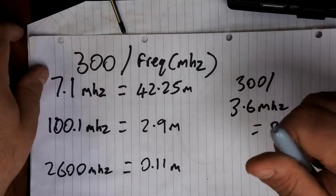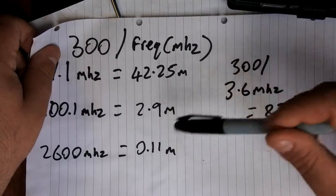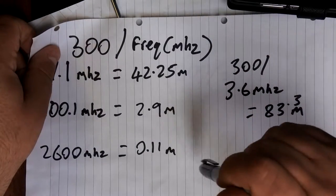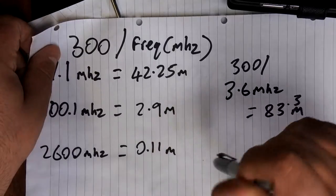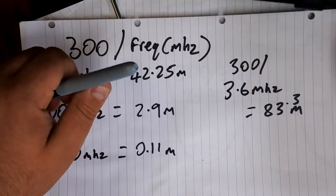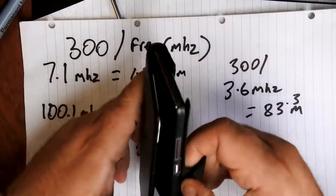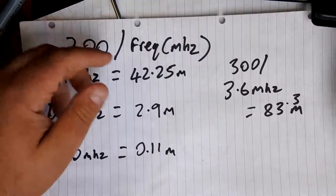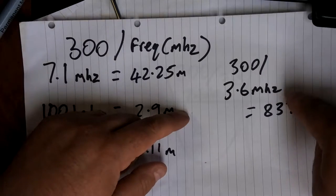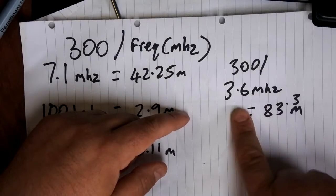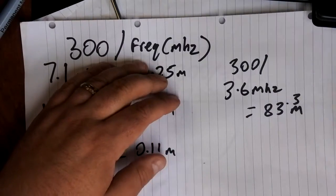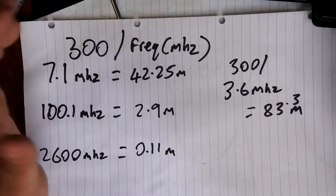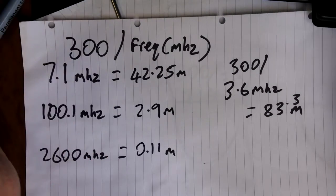And 2600 megahertz, which is one of the 4G frequencies for mobile phones, uses an antenna, has an ideal antenna length of 0.11 meters, so 11 centimeters. But again, if they're using a half wave or quarter wave antenna, you can easily see how that would fit into a phone like this. And of course, if you want to go down to the very bottom end of the amateur radio band, 3.6 megahertz would use an antenna 83.3 meters long, or if you're using a half wave dipole, 40 meters thereabouts.